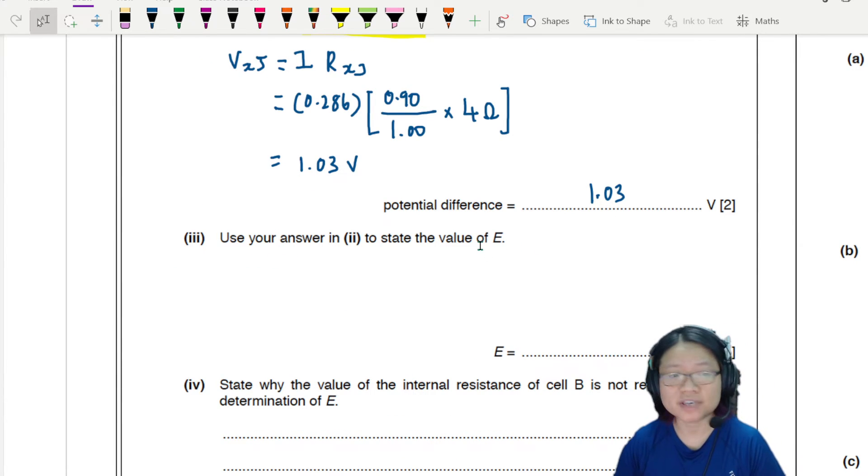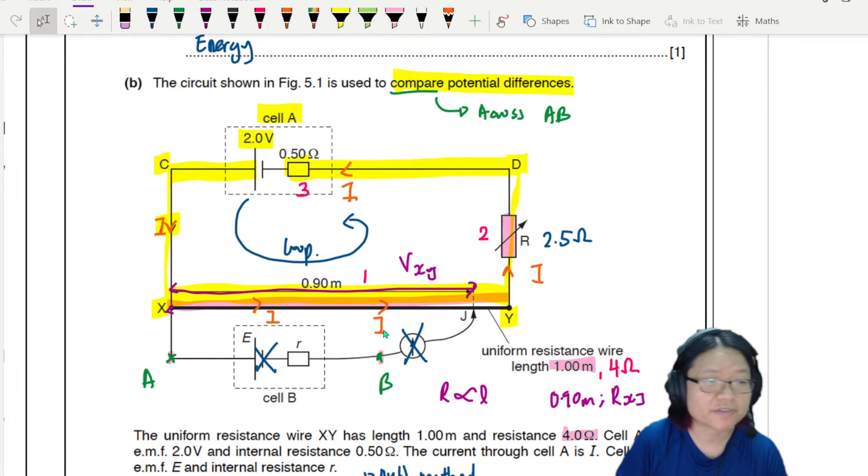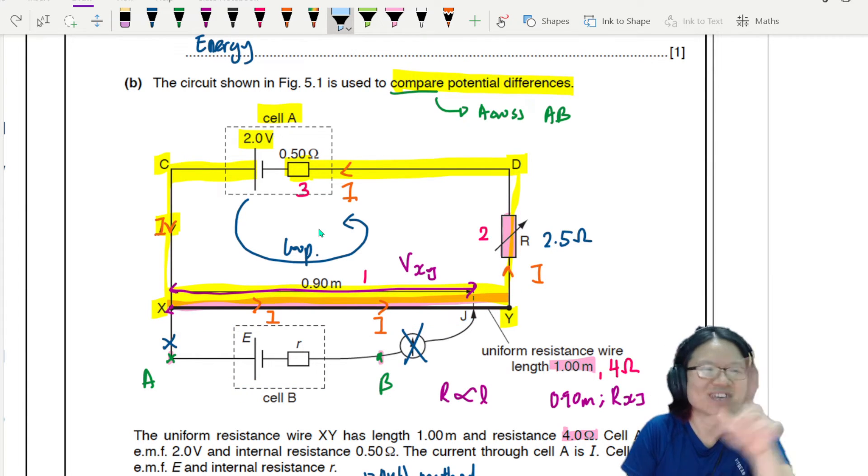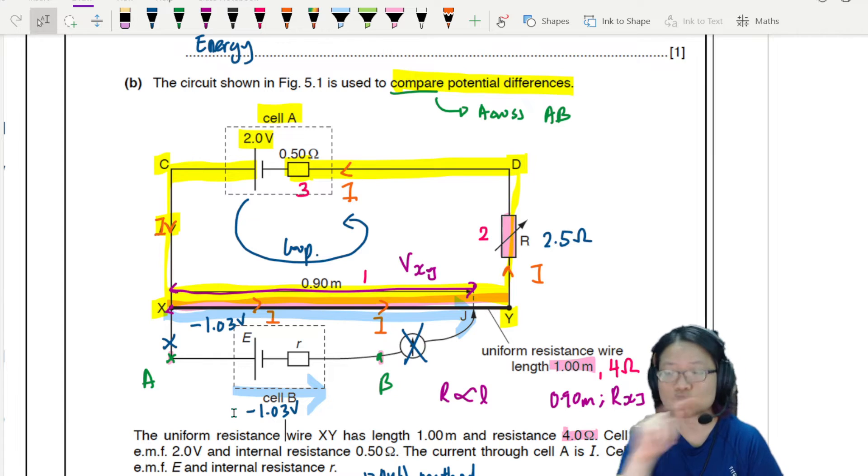Use your answer in part 2 to state the value of E. And also, state why the value of internal resistance of cell B is not required to find E. E is the EMF of cell B. Let's look at the circuit again. So this question wants you to find the value of E. But you know, if there's no current flowing through the cell, it means that the potential difference is equal. Or, in other words, the potential drop from X to J will be the same as the potential drop across E. We do this many times. If you recognize that, good job. If not, maybe you need to review or do more questions. So here to here, there's a drop of potential. And the drop of potential here to here and here to here is the same. So when we drop, it's 1.03 volt. So this E is also 1.03 volt. Because these 2 volt have to fight this battery. So it will drop 1.03. Same value.